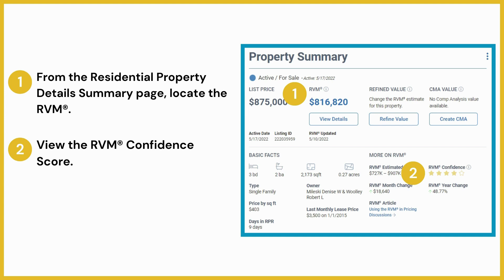The RVM confidence score describes the expected accuracy of a property's RVM. A five-star rating is the highest confidence rating and zero is the lowest. The confidence score is based on the outcomes of multiple automated valuation models. A high score indicates that the models yield similar estimated values for the property, while a low score indicates that the models yielded a wide range of estimated values.